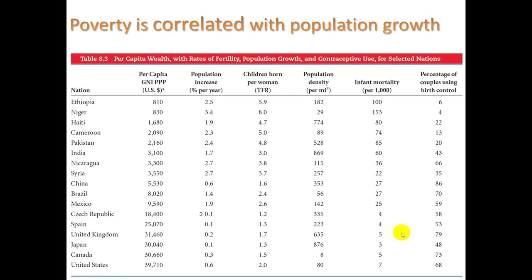Poverty is correlated with population growth — the more poverty, the more the population growth. Let's just say Ethiopia, one of the lowest per capita GNI — that's gross national income — and they have a big population increase per year of 2.5%, almost 6 TFR. Infant mortality is very high. Percentage of couples using birth control: only 6%.